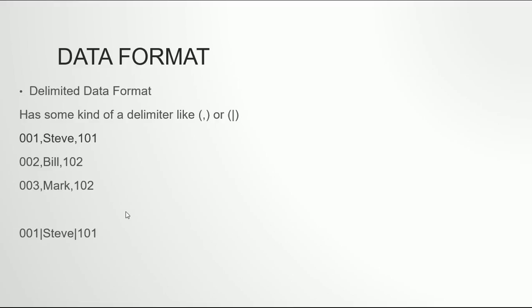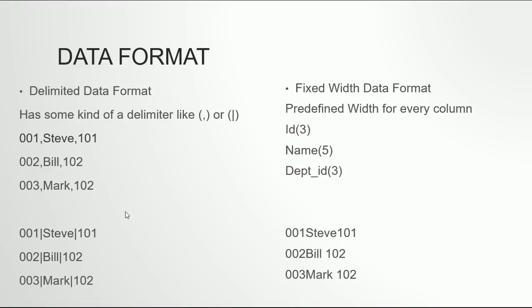So those three rows with data for Steve, Bill, and Mark represent comma-delimited data. Similarly, you can have the same data delimited with a pipe symbol. It's basically the same data, but instead of a comma stating the end of a column, a pipe symbol states the end of the column.